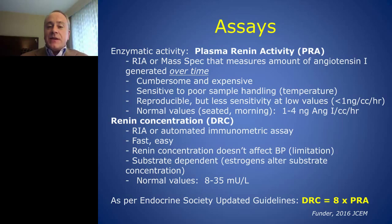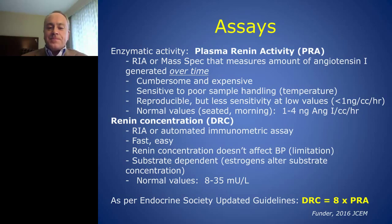The second way to measure renin is to directly measure how much renin is produced — not an activity assay but a concentration detection, done through automated immunometric assays. The advantage is that it can be very fast, easy, and not as technical. However, renin itself doesn't affect blood pressure — renin activity or the enzymatic process is what affects blood pressure, which could be considered a limitation. It is also substrate dependent. Normal values are typically reported between 8 and 35 milli-units per liter.